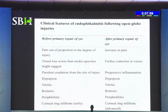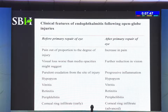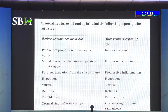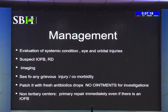Features suggesting development of endophthalmitis include: if the primary repair has not been done, pain out of proportion to the degree of injury, and visual acuity far worse than expected. There is purulent exudate, hypopyon, vitritis, and retinitis. Sometimes there may be only mild periflebitis in the periphery or vitreous infiltration — even those small signs, especially in fungal and quiet organisms like epidermidis, are very helpful in saving the eye. After repair: increased pain, reduced vision, hypopyon, and vitritis should all raise suspicion.